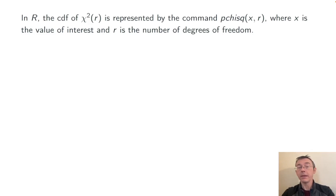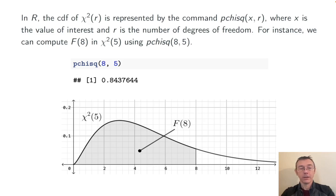Computations in R are done with the pchisq command, and to do that computation, you have to specify the value of interest. For instance, in that previous slide, the value of interest was 8, and you have to specify the number of degrees of freedom, r. So to do that computation, you'd be using the command pchisq(8, 5), and in this case, you get about 0.843. I have a whole video on chi-squared computations in R. I'll throw a link to that one up top as well.